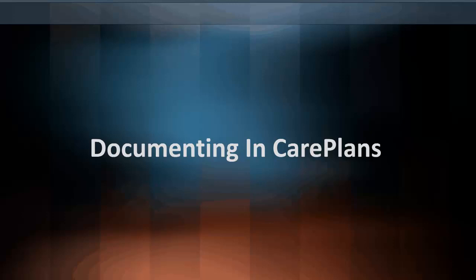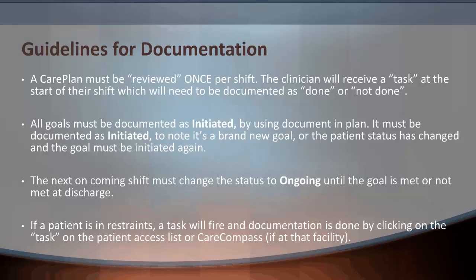Now we'll focus on the daily documentation in care plans. A care plan must be reviewed once a shift. The clinician will receive a task at the start of their shift, which will still need to be documented as done or not done. All goals must be documented as initiated by using Document and Plan. It must be documented as initiated to note it's a brand new goal, or if the patient's status has changed and the goal must be initiated again. The next oncoming shift must change the status to ongoing until the goal is met or not met at discharge. If a patient is in restraints, a task will fire and documentation is done by clicking on the task on the Patient Access List or Care Compass.